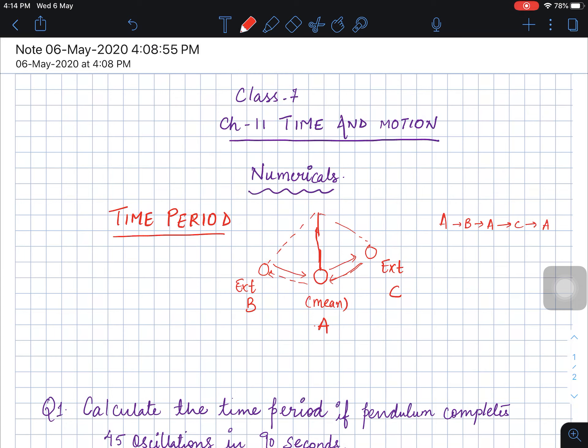If we start from the mean position, we can start again from any extreme end. For example, if we start from B, so from B it will go to A, then it will go to C, from C it will come back to A, then from A it will come back to B.